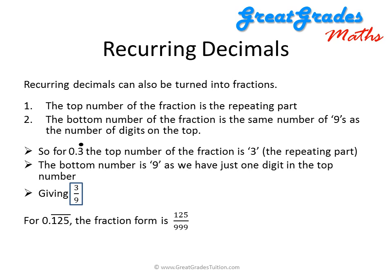For 0.125125125... — written as 0.125 with a bar across the 125 — the top number is the repeating part, which is 125. We have 3 digits, so we put three nines on the bottom. Our final fractional form is 125 over 999.